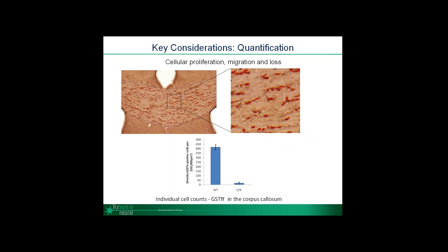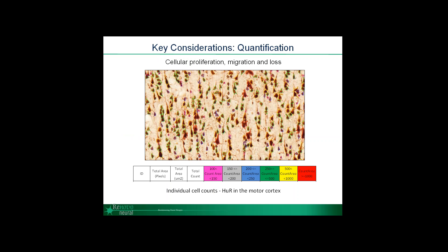Here is an example of an algorithm to count individual cells. In this staining for GST-pi, which stains all the oligodendrocytes in the corpus callosum, you can see individual cells outlined in red that our algorithm has identified based on both shape and intensity. This gives an absolute number of cells in each image that can be presented as a density within your ROI. We can further add criteria with respect to shape and size to segregate data by size threshold and begin to understand changes in neuronal populations during disease.